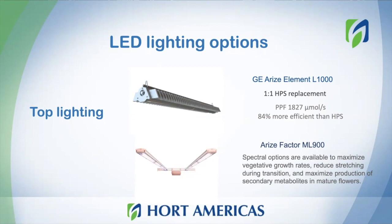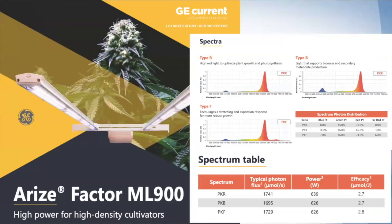Another option for cannabis is the Arise Factor ML900. These lamps were designed to provide the best light quality and quantity for cannabis. For example, these lamps will reduce stretching, which we know is beneficial in indoor production because cannabis can be a really tall plant. They will also maximize production of secondary metabolites in mature flowers. Here you can see the spectrum options available. For example, fire red can be a good option to promote flowering and also root development. The PKF spectrum is now also offering the option to add some fire red.